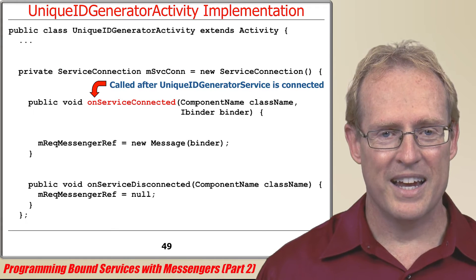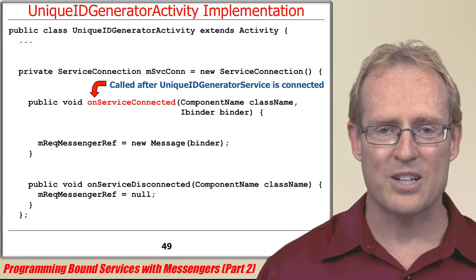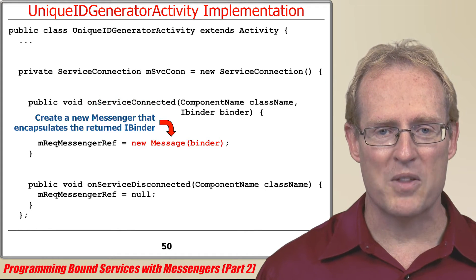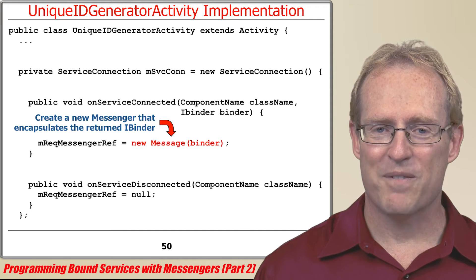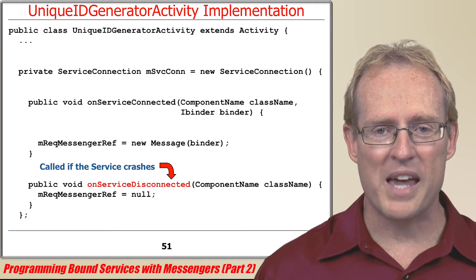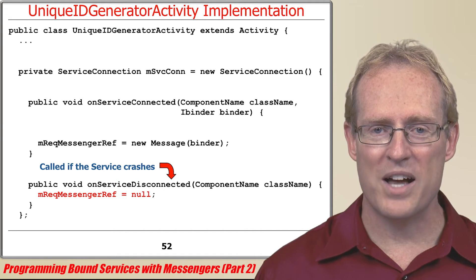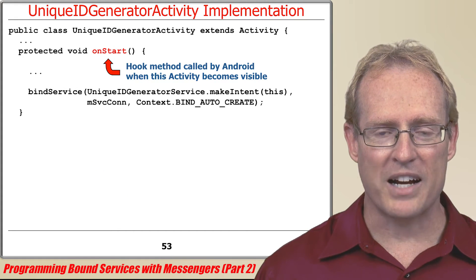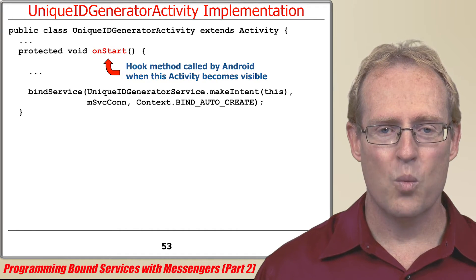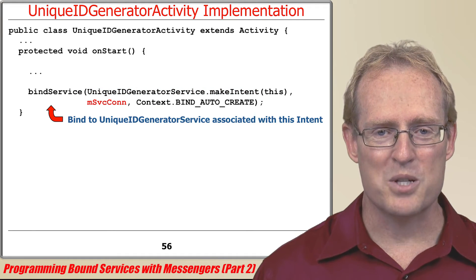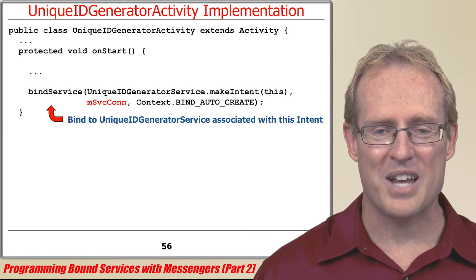After the service is connected, Android's service framework dispatches the onServiceConnected hook method, which creates a new messenger that encapsulates the iBinder returned by the service's onBind factory method. If the service crashes, Android's service framework dispatches the onServiceDisconnected hook method to inform the activity not to send any more requests until the service is running again. When the activity becomes visible, Android's activity framework calls the onStart hook method, which calls bindService, passing the appropriate intent returned by the makeIntent factory method and the service connection object used to dispatch callbacks to the activity when a connection is established with the service.